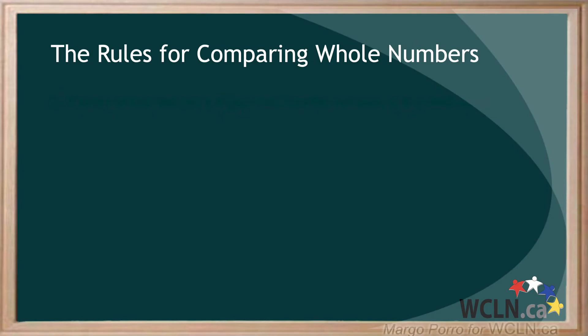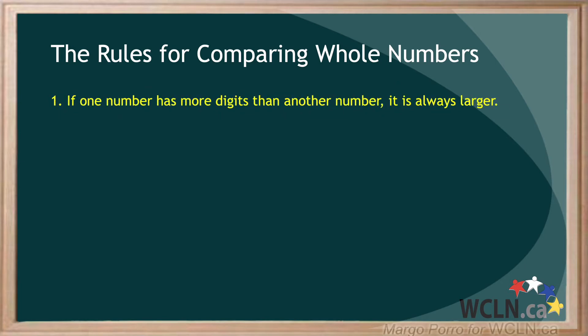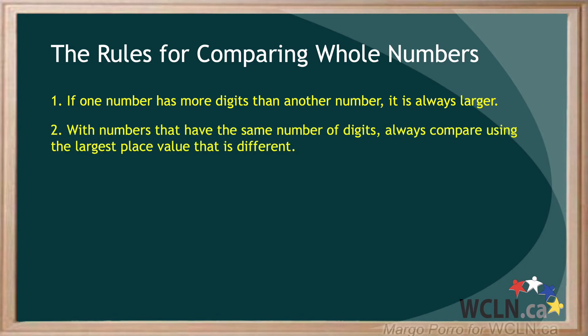We have two basic rules for comparing whole numbers — and whole numbers are numbers without a decimal. Rule number one: if one number has more digits than another number, it is always larger. Rule number two: with numbers that have the same number of digits, always compare using the largest place value that is different.